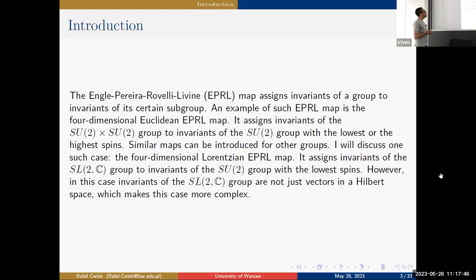Here SU(2) is considered as a diagonal subgroup of SU(2)×SU(2). There is a clarifying exchange: the second group should indeed be two copies of SU(2) in the Euclidean case, where SU(2) is the diagonal subgroup of SU(2)×SU(2).